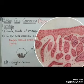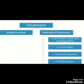Histologically, you can see islands and sheets formed by epithelial cells, with a palisade arrangement of cells at the periphery. For treatment, surgical excision is the primary option. Destructive treatments include electrodesiccation and curettage (EDC), cryosurgery, carbon dioxide laser, and radiotherapy.